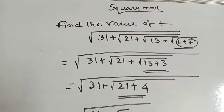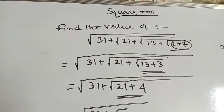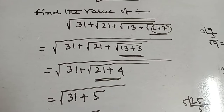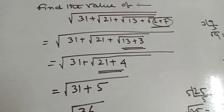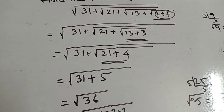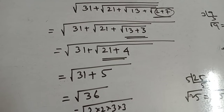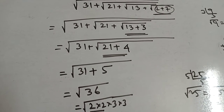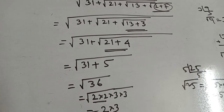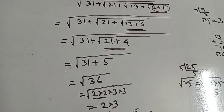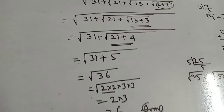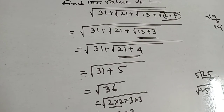If given this type of sum, you will start from the inner side of the Square Root. At last, Square Root of 2 plus 7 is 9, Square Root of 9 is 3. Then 13 plus 3 is 16, Square Root of 16 is 4. Then 21 plus 4 is 25. Next, 31 plus 5 is 36, and the Square Root of 36 is 6. This type of sum is important.